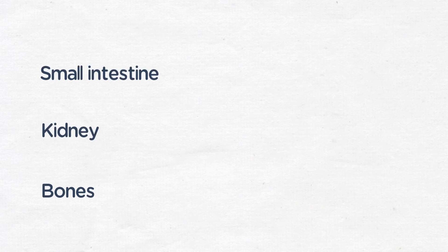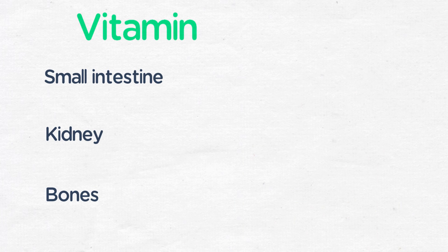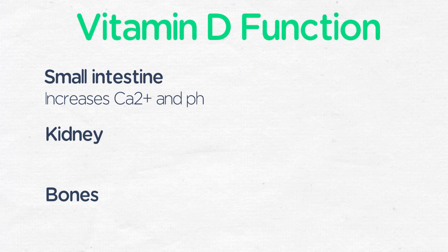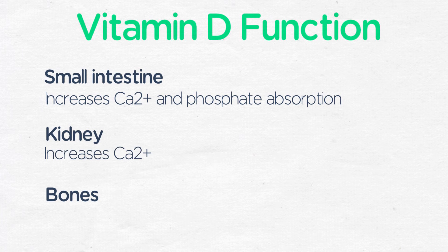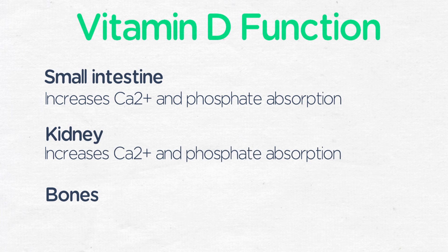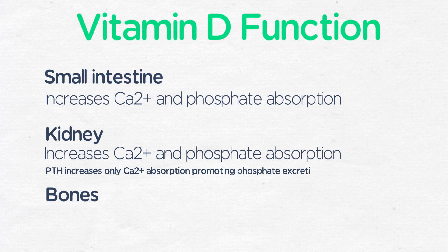In the small intestine, vitamin D will increase calcium and phosphate absorption. In the kidney, it will also increase calcium and phosphate absorption. However, it is important to note that parathyroid hormone increases only calcium absorption in the kidneys, and it promotes phosphate excretion in this organ.